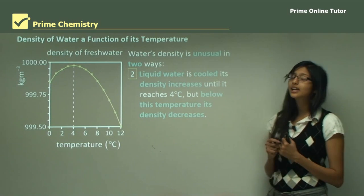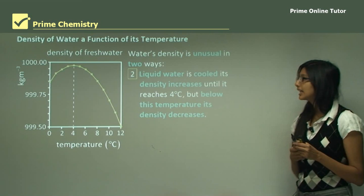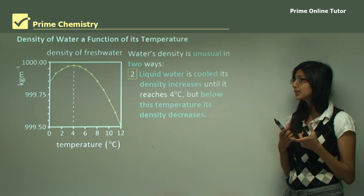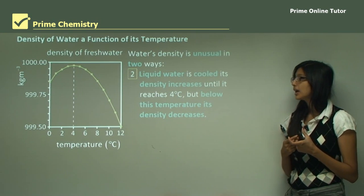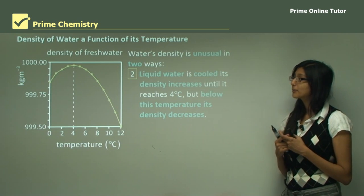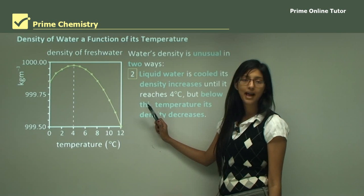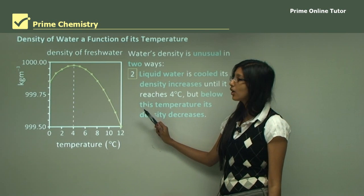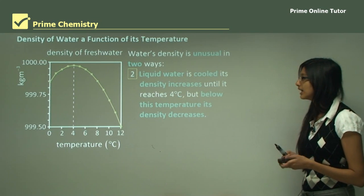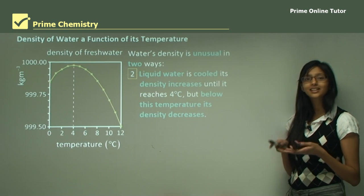An unusual property of water's density is that when liquid water is cooled, its density increases until it reaches 4 degrees Celsius. From that graph you can see that at 4 degrees Celsius, it reaches its maximum density of 1 kilogram per centimeter cubed. But below this temperature, the density decreases.